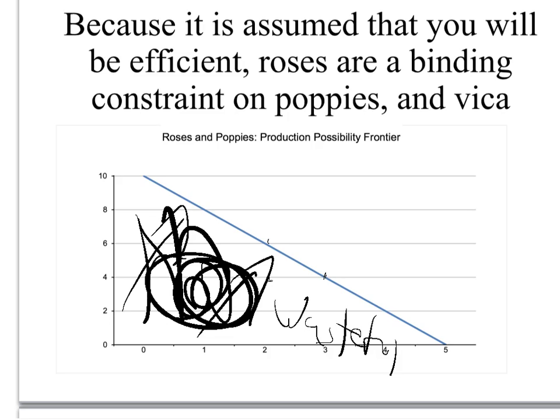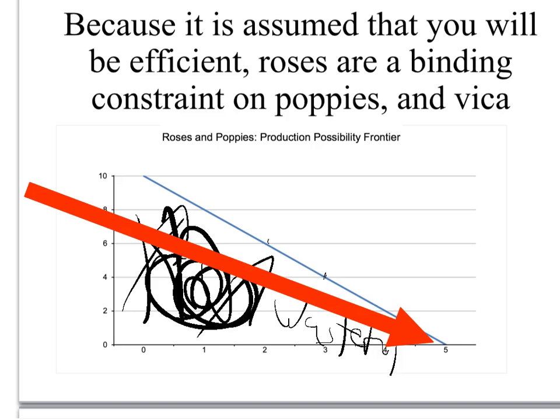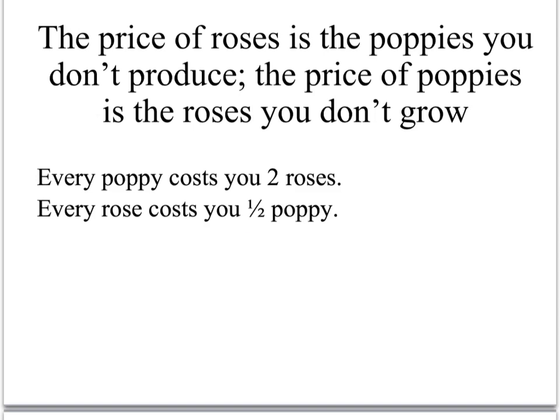As you move along the frontier, you give up roses to get poppies and give up poppies to get roses. The price of roses is the opportunity cost of roses — what do you have to give up to get roses? You have to give up poppies. Every poppy costs you two roses, and every rose costs you half a poppy.